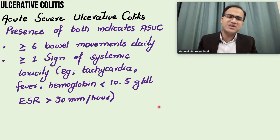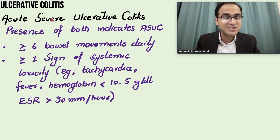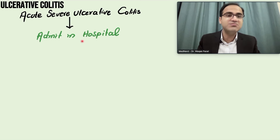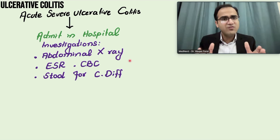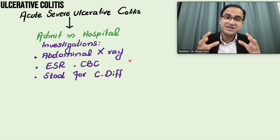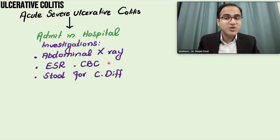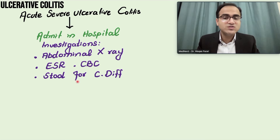Usually, patients of ulcerative colitis can be managed as outpatients, but if the patient gets an exacerbation and has acute severe ulcerative colitis, you have to admit them to the hospital. After admission, send certain investigations: perform abdominal X-ray to look for signs of perforation or air under the diaphragm. Check ESR, CBC, hemoglobin level, and do stool for C. diff toxin.